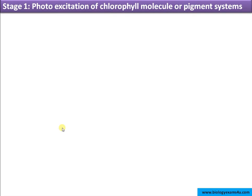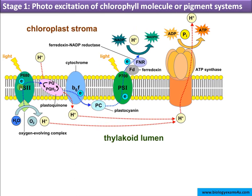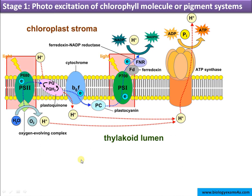Starting with the first stage — photo excitation of the chlorophyll molecule or pigment systems. This is a thylakoid membrane where photosystems and all other electron carriers are located, along with ATP synthase. The thylakoid membrane is the site of the light-dependent reaction of photosynthesis. This is the chloroplast stroma and this is the thylakoid lumen or thylakoid space.